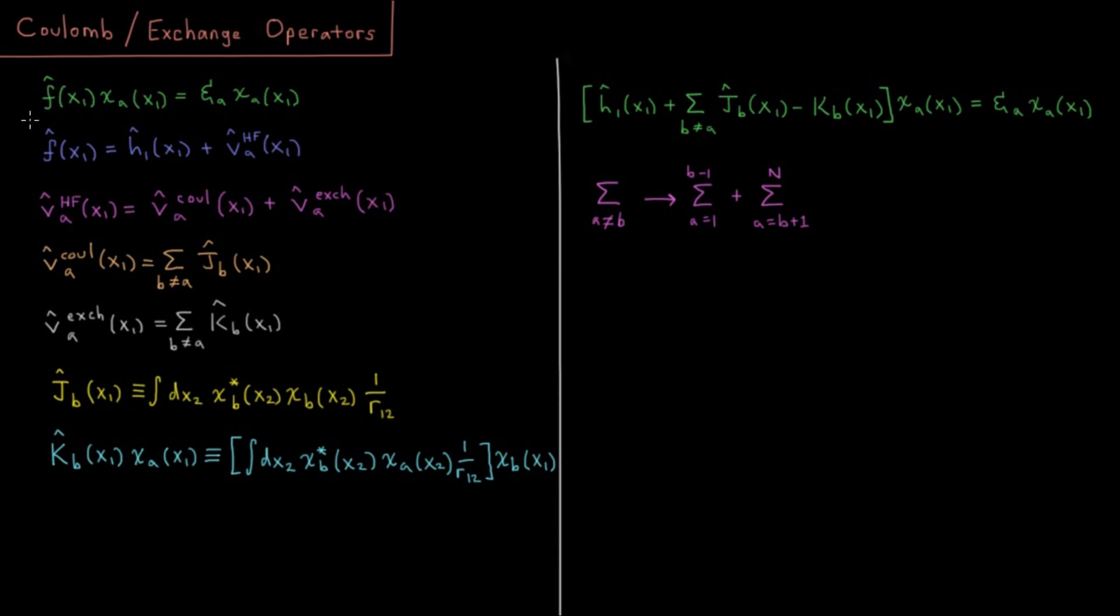And the Fock operator acting on some spin orbital gives the orbital energy times the same spin orbital again. This is a pseudo-eigenvalue equation, almost an eigenvalue equation because this operator does depend on what all the other spin orbitals are.